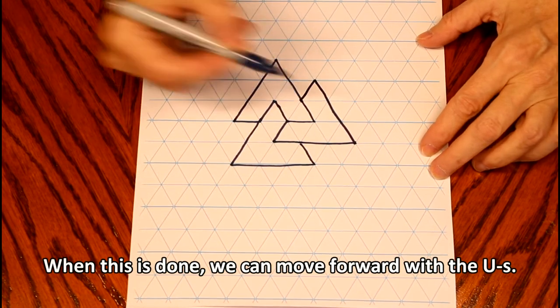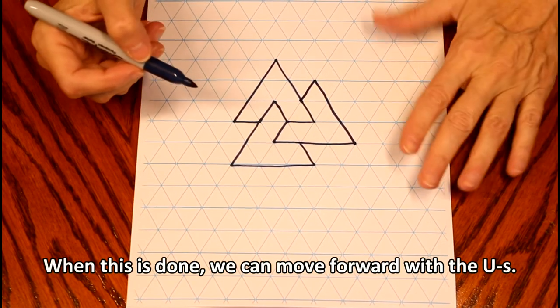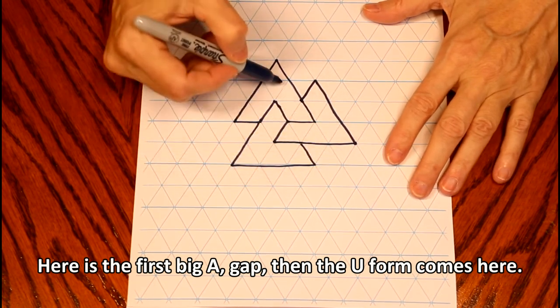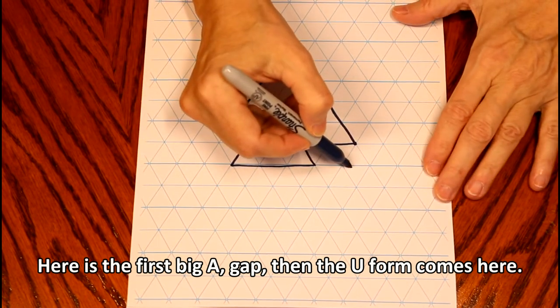When this is done, we can move forward with the U's. Here is the first big A, gap, and the U form comes here.